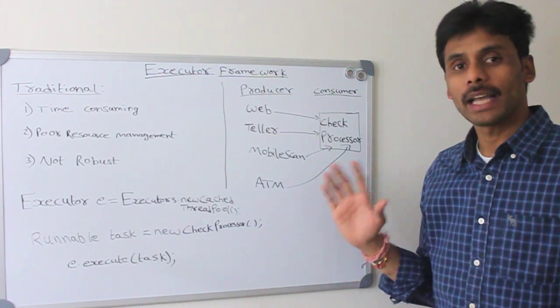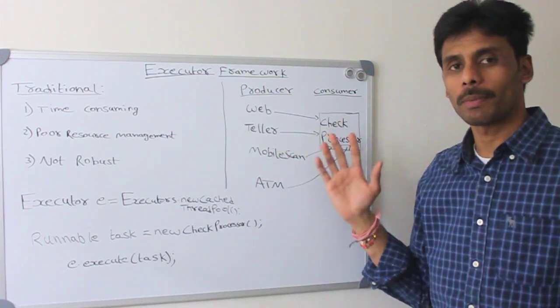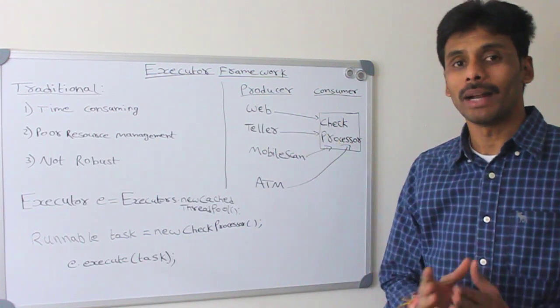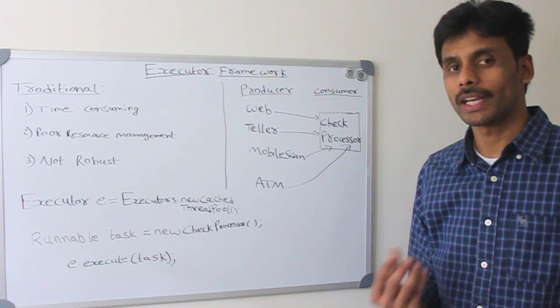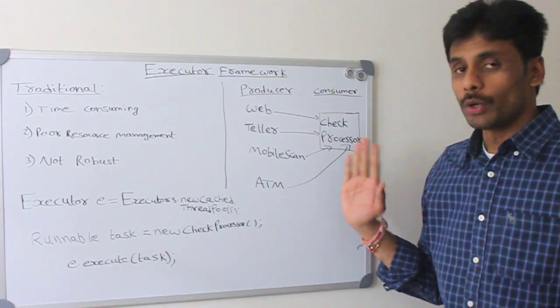Before we get there, let's consider an example of producer-consumer pattern because producer-consumer pattern is when multi-threading makes sense and multi-threading can be used very efficiently to implement a producer-consumer pattern where we can do concurrent work.